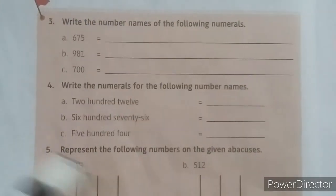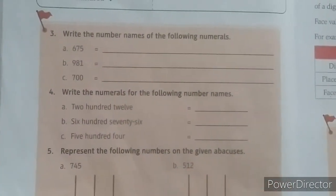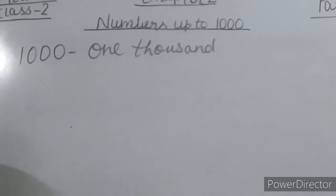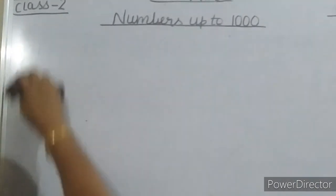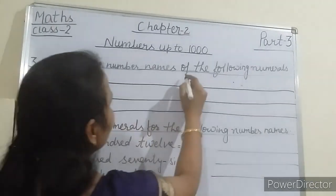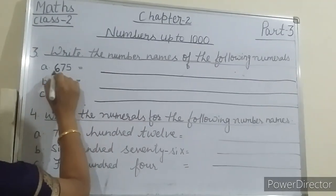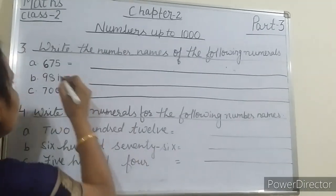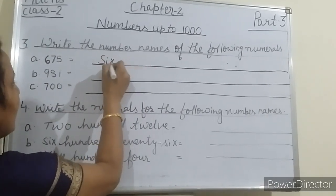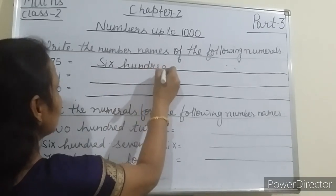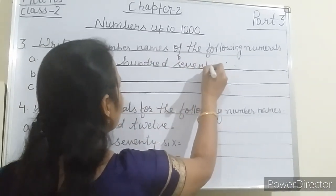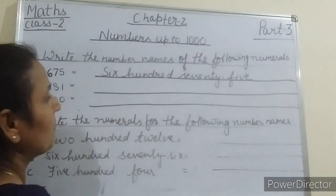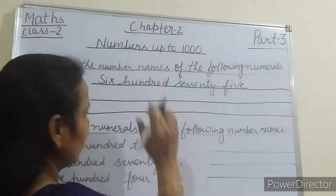Now students, I am giving you questions from the checkpoint, and this is question number three. Write the number names of the following numerals. So first number: six hundred seventy-five. How will you write? First of all, write six hundred — so six hundred seventy-five. Students, don't write plurals while writing number names. So don't write 'hundreds', say 'hundred'.